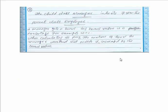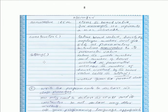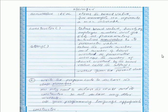For part b: the child class Manager inherits from the parent class Employee. A manager gets a bonus — this bonus value is a parameter, for example 10%. When calculating the pay, the number of hours the manager worked that week is increased by the bonus value. The Manager class attributes are: bonus_value, a constructor, and a set_pay method.